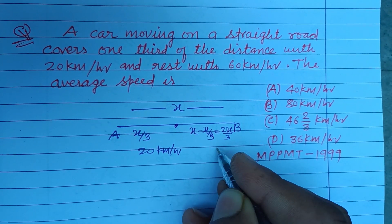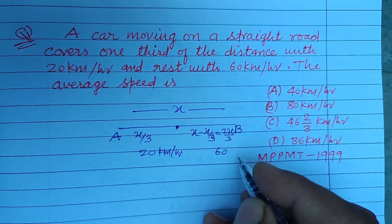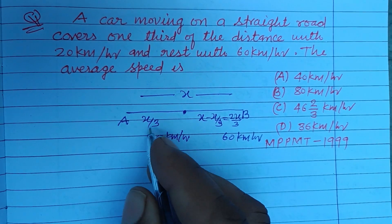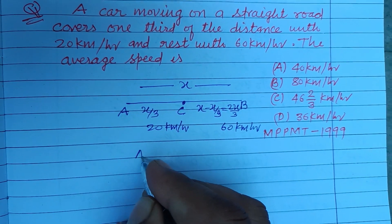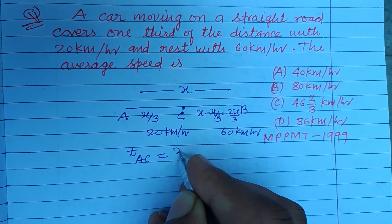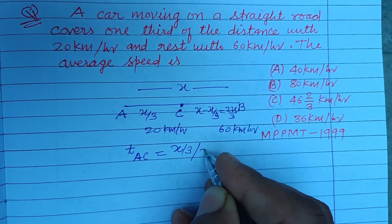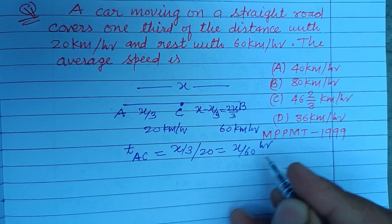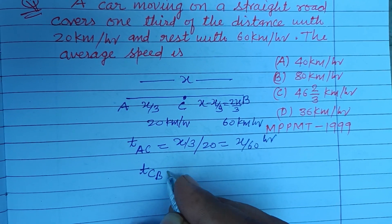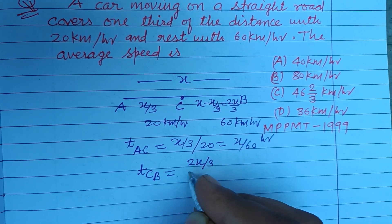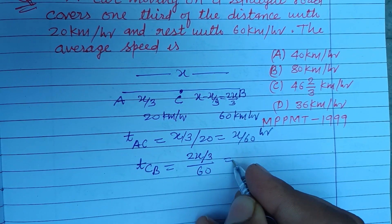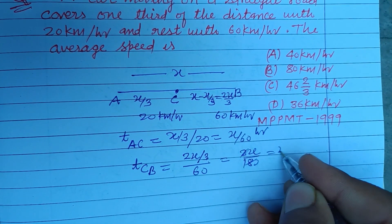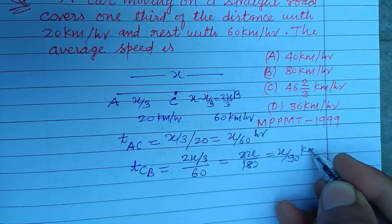So here, time taken in AC part, time of AC is X/3 over 20, this is X/60 hour. And time of CB is 2X/3 distance over speed, so this is 2X/3 divided by 60, which equals 2X/180, or X/90 hour.